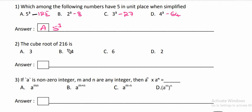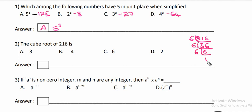The cube root of 216. You have to divide 216 by 6. 6 times 3 is 18, 6 times 6 is 36, 6 times 6 is 36, 6 times 1 is 6. So 216 is equal to 6 cube. That is the 6 cube. Therefore, answer option C is the correct answer.